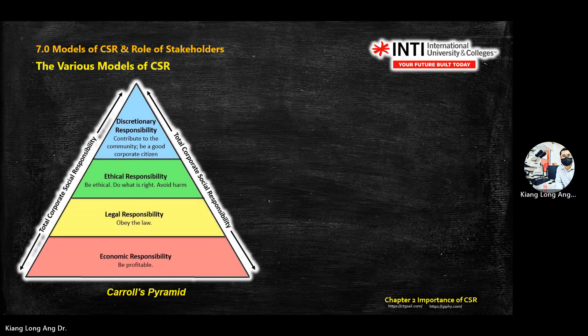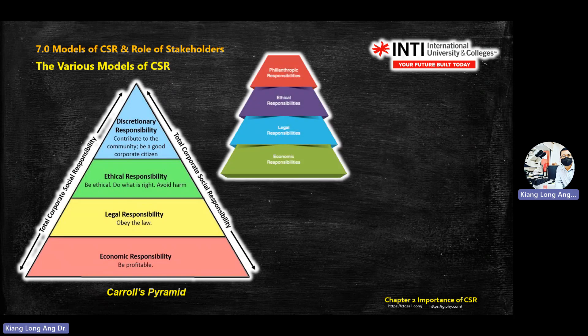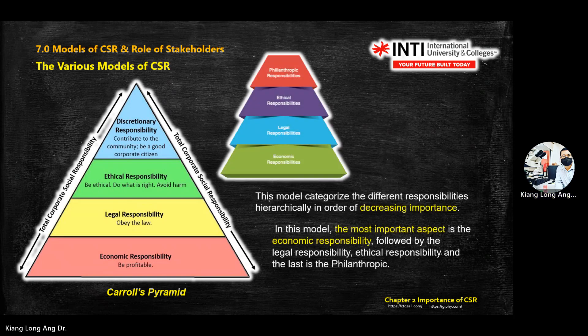The company gives lower priority to legal compared to economics. Legal gets priority over ethical, and ethical has better priority compared to philanthropic. So this is a pyramid meaning: the bigger the size, the more priority the company gives to that dimension.